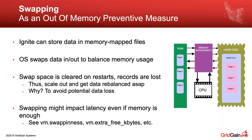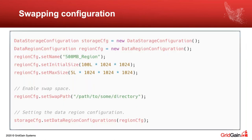How do you configure swapping in Ignite? It's simple. When defining your data storage configuration, you create a region with an initial size and maximum size, and then tell Ignite to use a specific swap directory. Once you set this, the operating system is responsible for moving data back and forth between memory and disk.